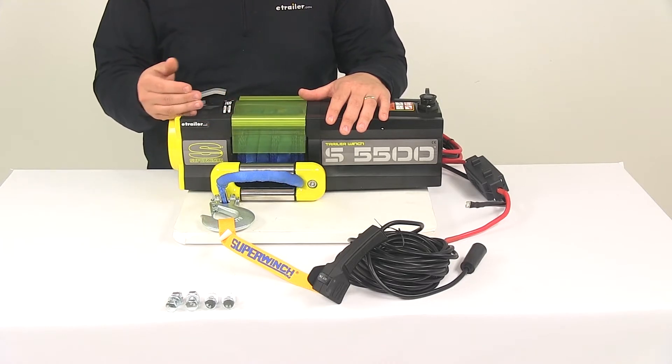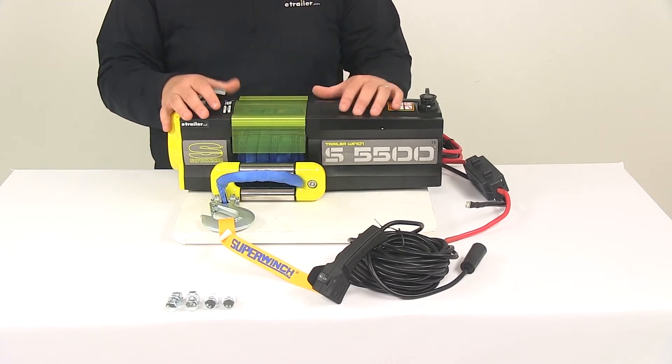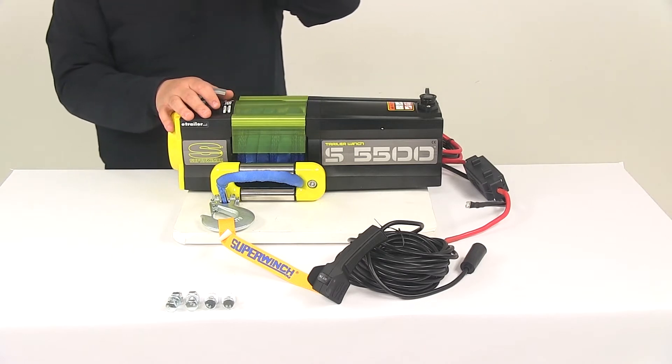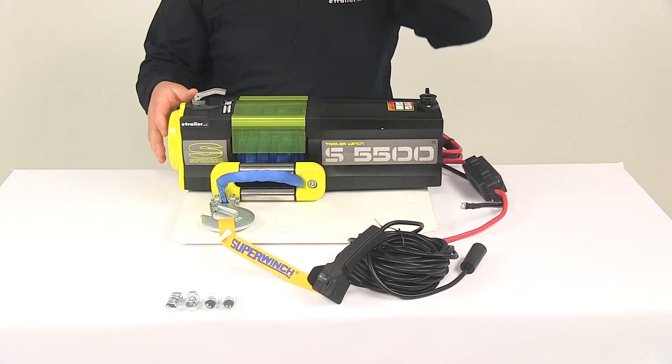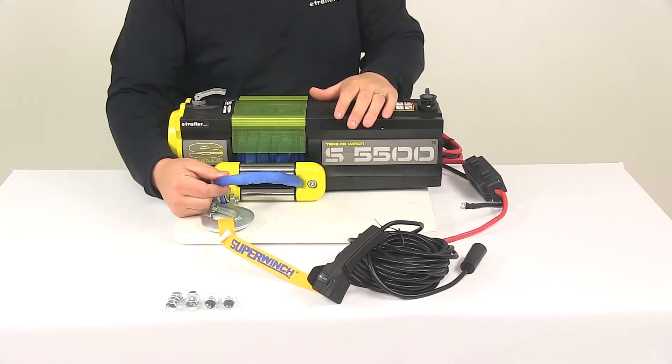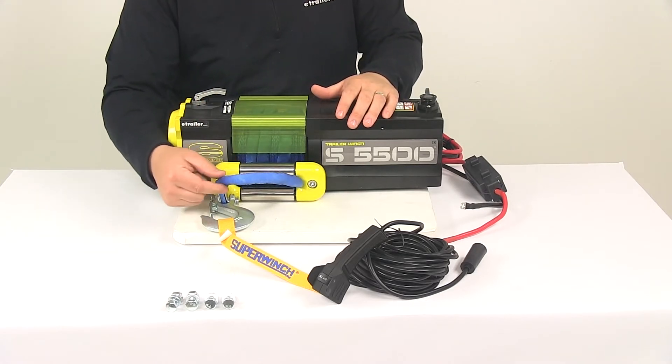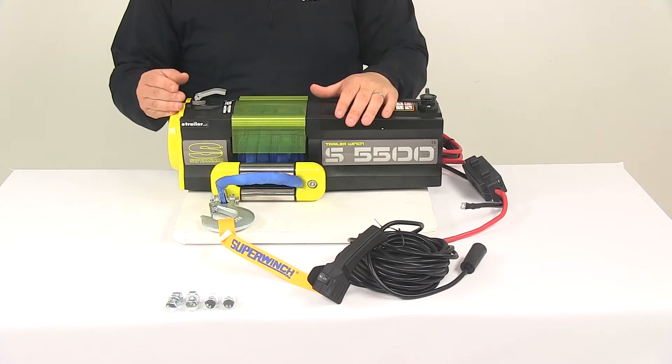With no load on the line, we're looking at 24 feet per minute for line pull speed. The winch is designed for 12 volt DC systems. It has a very clean and sleek design and contains a synthetic rope measuring a quarter of an inch in diameter by 60 feet long.